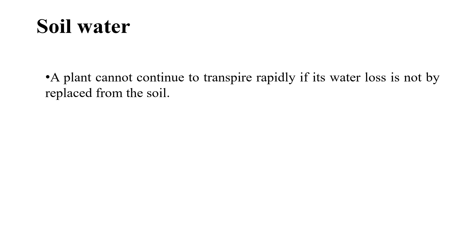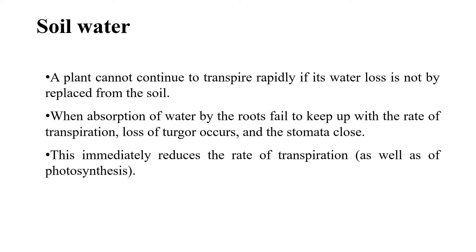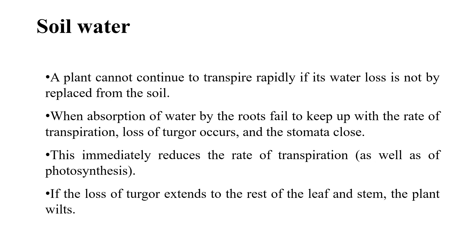5. Soil Water: A plant cannot continue to transpire rapidly if its water loss is not replaced from the soil. When absorption of water by the roots fails to keep up with the rate of transpiration, loss of turgor occurs and the stomata close. This immediately reduces the rate of transpiration as well as photosynthesis. If the loss of turgor extends to the rest of the leaf and stem, the plant wilts.